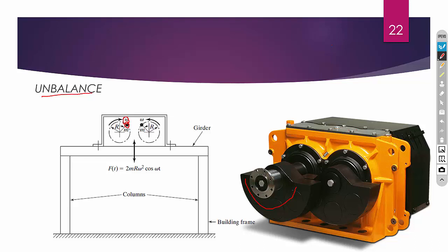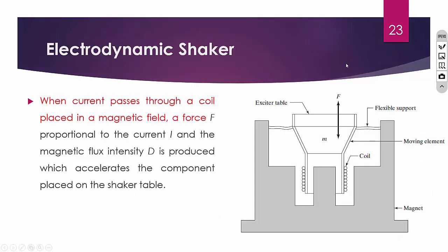This concept is used in mobile phone vibrators, where a small vibro-motor is used with some unbalance. The next type is the electrodynamic shaker, which is used in almost all applications nowadays. It has a coil and a magnet.